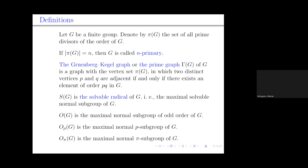I want to recall the definitions of maximal normal subgroups. S(G) is a maximal normal subgroup of odd order of G. O_p(G) is a maximal normal p-subgroup of G, and O_π(G) is a maximal normal π-subgroup of G.